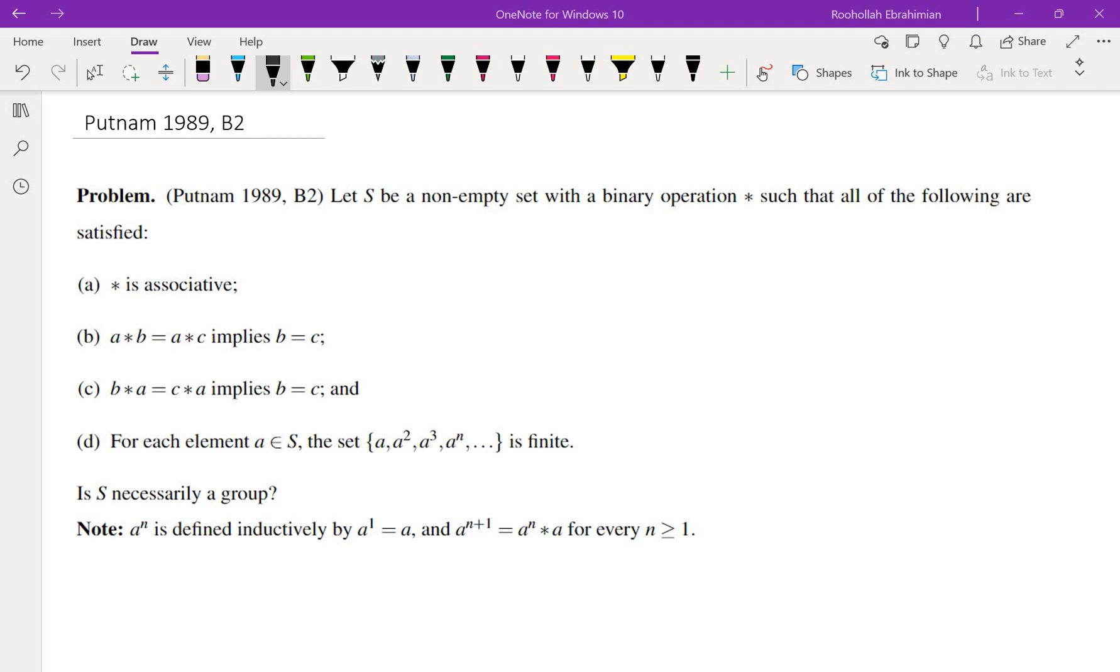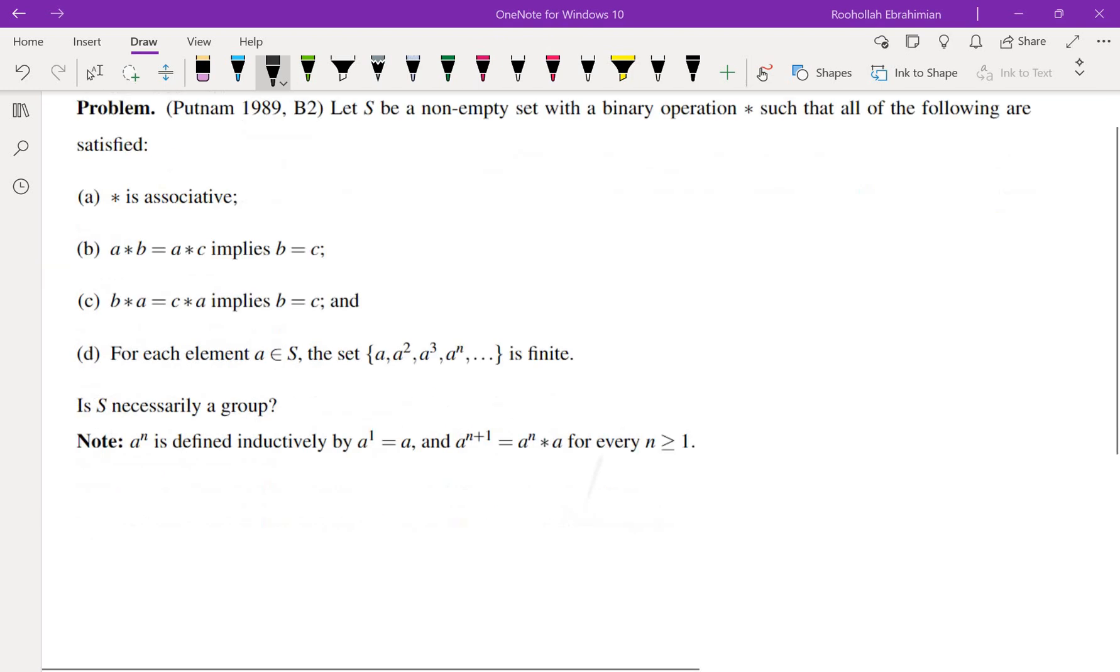This is an abstract algebra problem asking us to see if a set is a group that satisfies these certain properties. The operation is associative, it has cancellation from the right, it has cancellation from the left, and powers of every element give you a finite set. In other words, there's going to be a cycle when you look at powers of this element. So I started with the last condition.